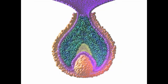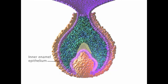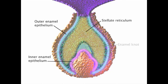As the cells of the enamel organ differentiate, several cell populations can be identified. These include the inner enamel epithelium, the outer enamel epithelium, the stellate reticulum, and the enamel knot.